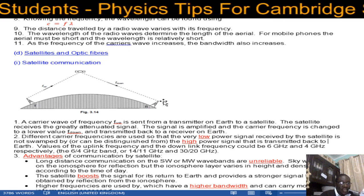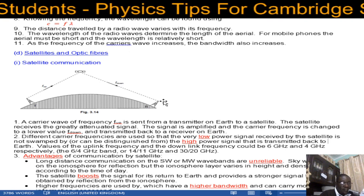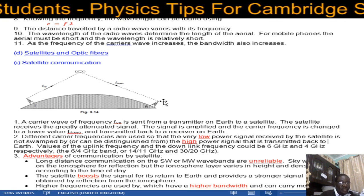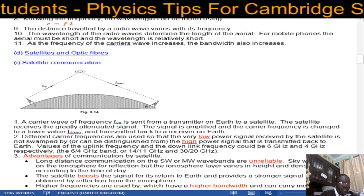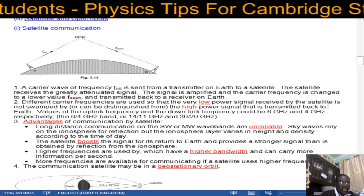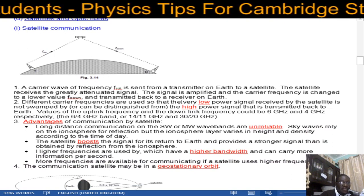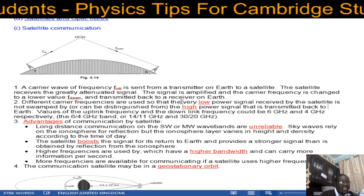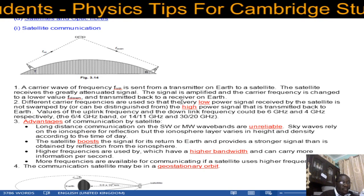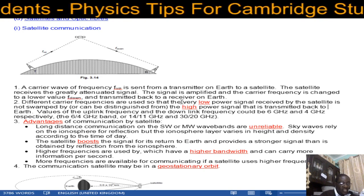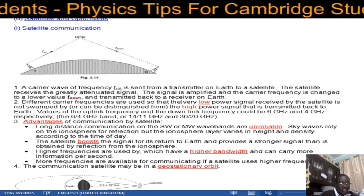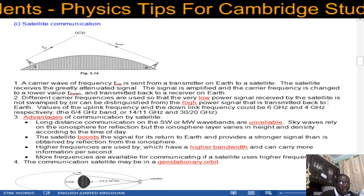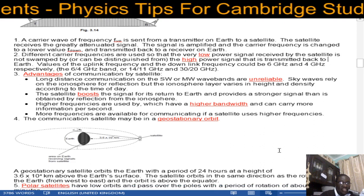Values of the uplink frequency and the downlink frequency could be 6/4, 14/11, or 30/20 gigahertz, where the higher value is the uplink and the lower is the downlink. The advantage of satellite communication is that long distance communication on shortwave and medium wave bands is unreliable, as skywaves rely on the ionosphere, which varies in height and density throughout the day. The satellite boosts the signal for its return to Earth, providing a stronger signal than obtained by ionospheric reflection. Higher frequencies are used, which have a higher bandwidth and can carry more information per second.